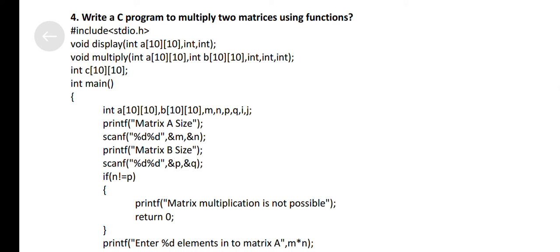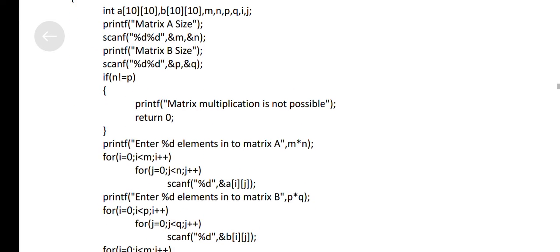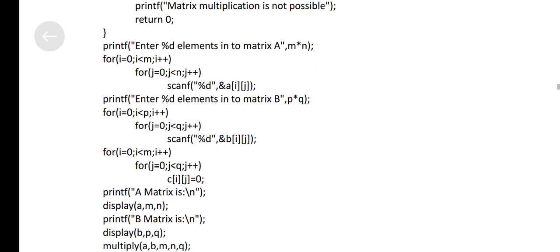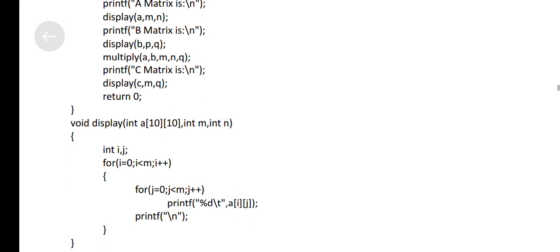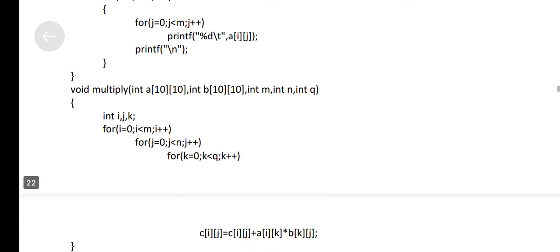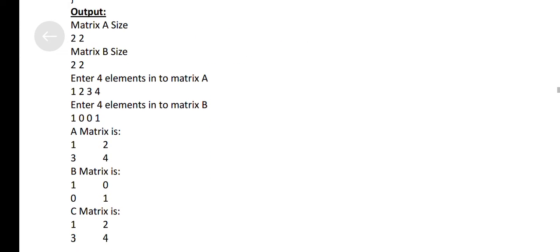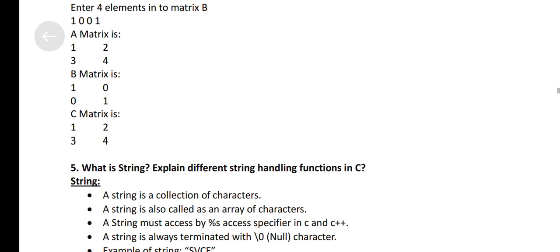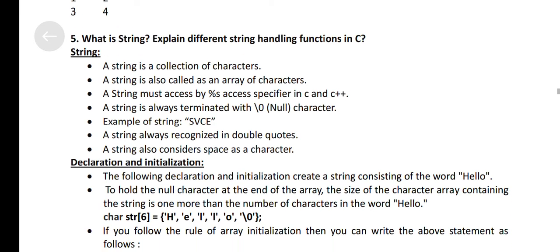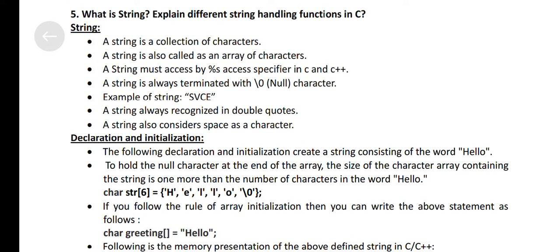Write a C program to multiply two matrices using functions. What is the string? Explain different string handling functions in C.